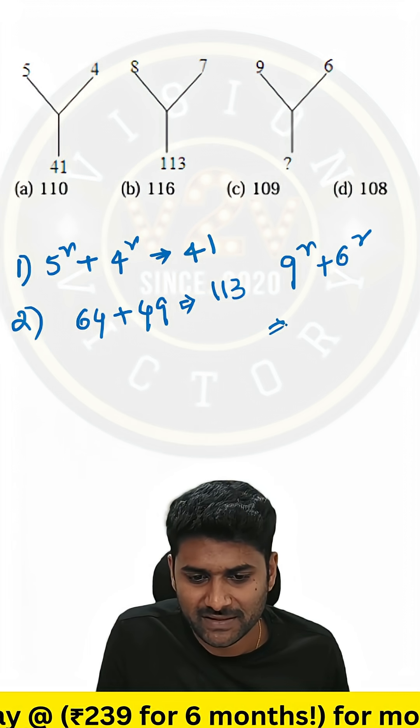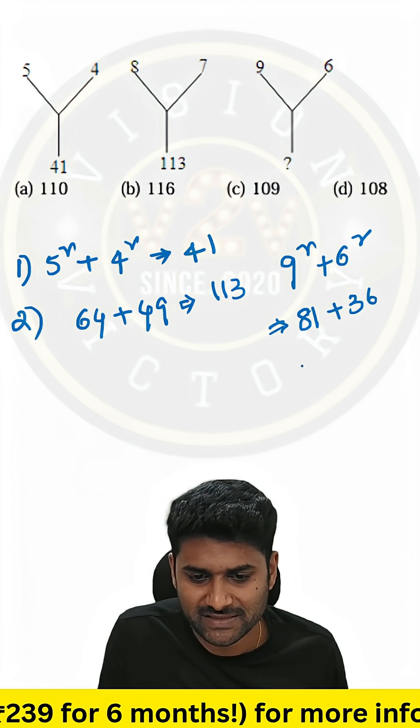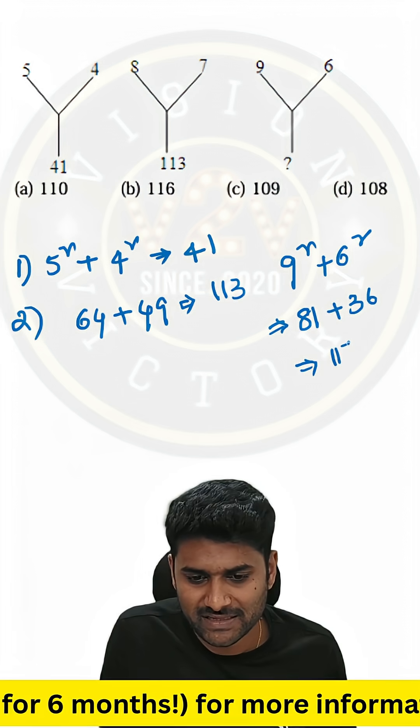9 square plus 6 square, 9 square is 81, 6 square is 36, resultant is 117.